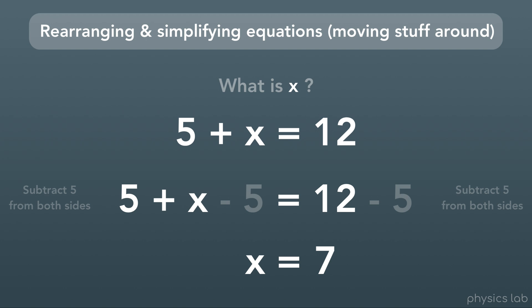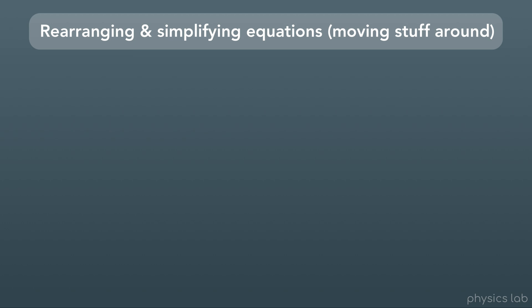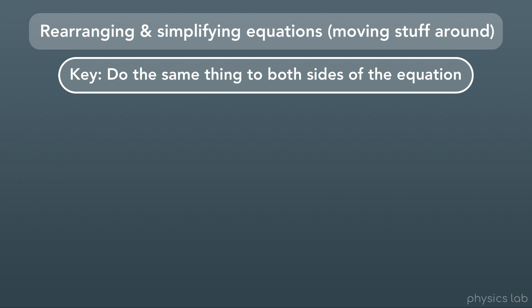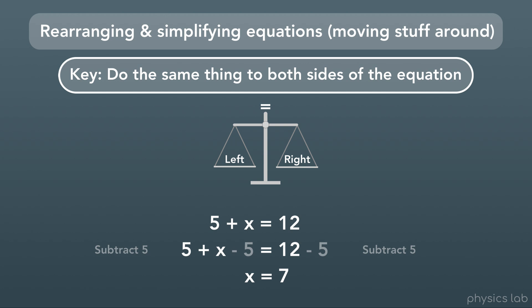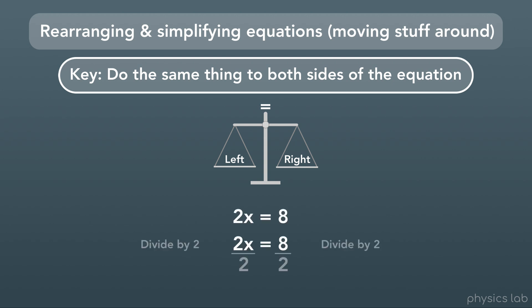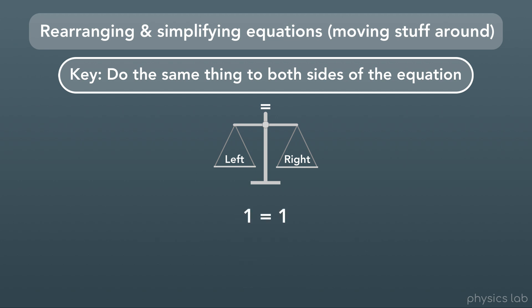What we just did illustrates the big important thing about equations: you can do whatever you want to them, as long as you do the same thing to both sides. That way the equation is still a correct, true statement. Think of it like a balance — left side and right side — as long as we do the same thing to both sides, the equation stays true. For example, we can divide both sides of 2x equals 8 by 2, giving us 2x divided by 2 is just x, and 8 divided by 2 is 4, so x equals 4.